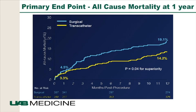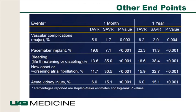This was published in the New England Journal and presented at the last ACC meeting. Looking at other endpoints: vascular complications were slightly higher with transcatheter valve, pacemaker implantation was almost 20% with the CoreValve, bleeding was higher with surgical AVR, new-onset or worsening atrial fibrillation was higher with surgical valve replacement, and the risk of acute kidney injury was higher with surgical aortic valve replacement.